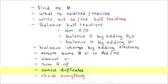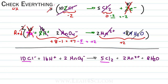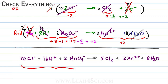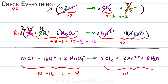Do we have any duplicates? Nope. Let's check the atoms: ten chlorines and five times two is ten chlorine; sixteen hydrogens and eight times two is sixteen hydrogen; two manganese and two manganese; two times four is eight oxygen and eight times one is eight oxygen. Atoms are balanced. Now charges: in the reactants, minus ten from Cl-, plus sixteen from H+, minus two from MnO4- gives minus ten plus sixteen minus two which equals plus four. On the products, zero from Cl2, two times plus two is plus four from Mn2+, and zero from H2O, giving plus four. Plus four equals plus four — atoms balanced, charges balanced, redox reaction is balanced.